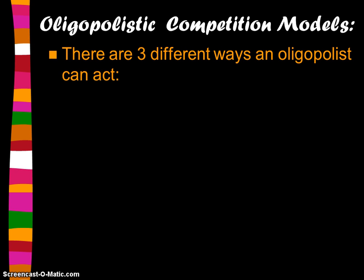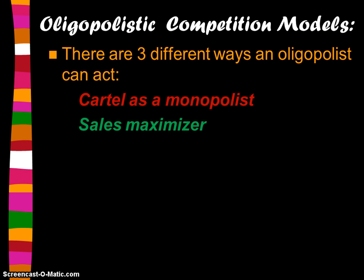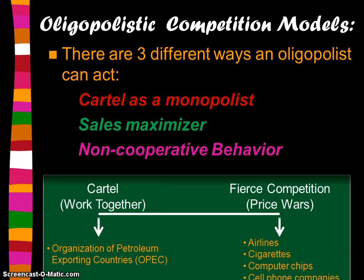There are three ways to analyze oligopolistic behavior. First, the dominant firms could act as a cartel and analyze the market as though it were a monopoly, working together. Second, the firms could be sales maximizers. Third, the firms could engage in non-cooperative behavior. On one end of the spectrum, firms work together — which is illegal in the United States — and on the other end, the firms are fierce competitors.